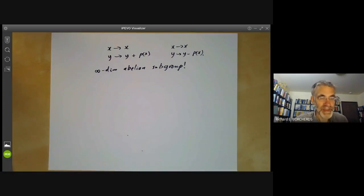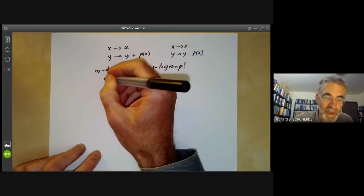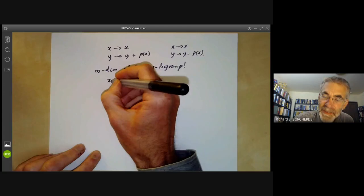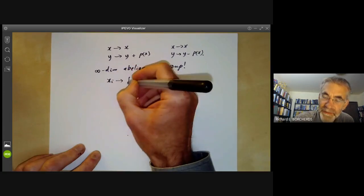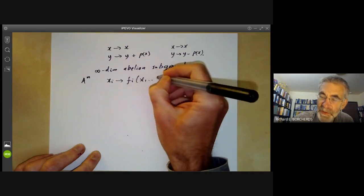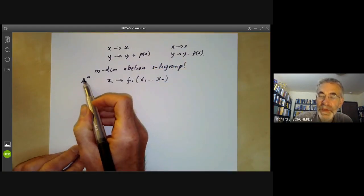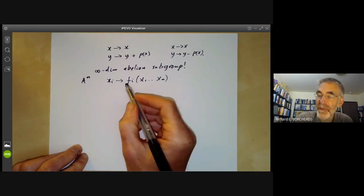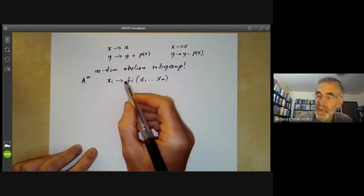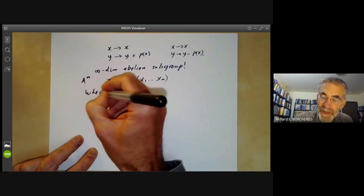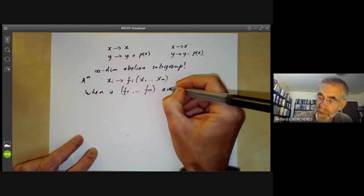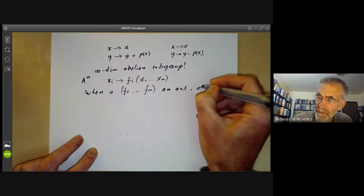What else can you say about it? Suppose you've got an automorphism of affine space, where we map all the xᵢ to fᵢ(x₁,...,xₙ). In general, an endomorphism of affine space will be given by n polynomials in n variables. The question is, when is this an automorphism?